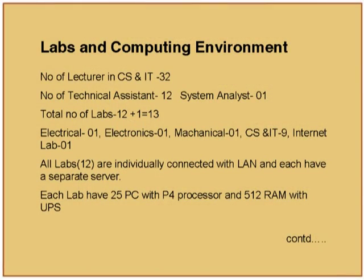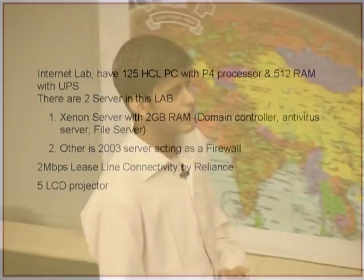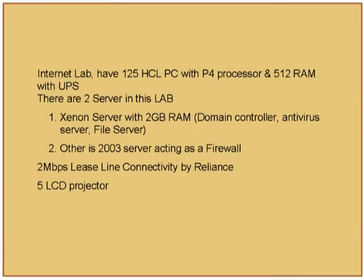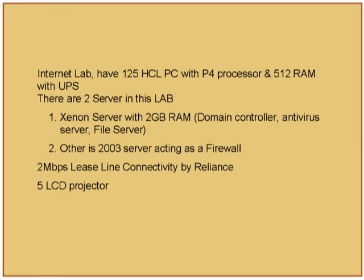Each lab has 25 PCs with a Pentium 4 processor and 512 MB RAM. The internet lab has 125 PCs with P4 processor and 512 MB RAM with UPS. There are two servers in the internet lab: one is the Xeon server with 2 GB RAM, working as domain controller, antivirus, and file server; the other is a Windows 2000 server. We have a 2 Mbps leased line connection with Reliance.